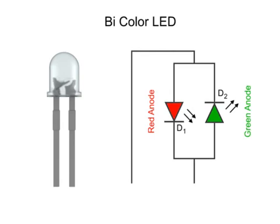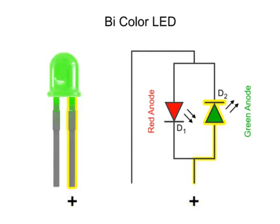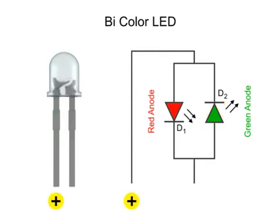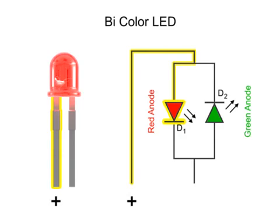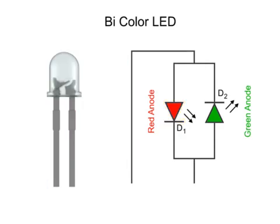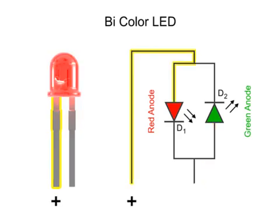The terminal that is made positive determines the LED that lights. If a positive voltage is supplied to the green anode, then the green LED lights. If positive voltage is supplied to the red anode, then the red LED lights. With the two-terminal system, only one LED can light at a time, limiting the device to only two colors.